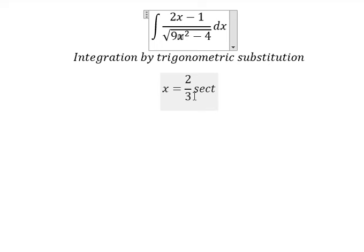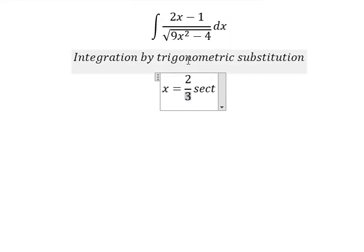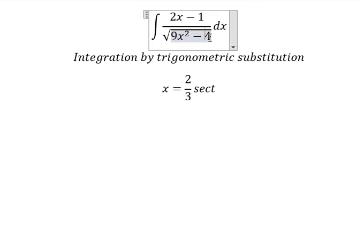We have 4 over 9 secant of t square. Number 9 we cancel. Number 4, we can do factorization. Secant of t square minus 1, we change to tan t square. And then we simplify the square root and dx.